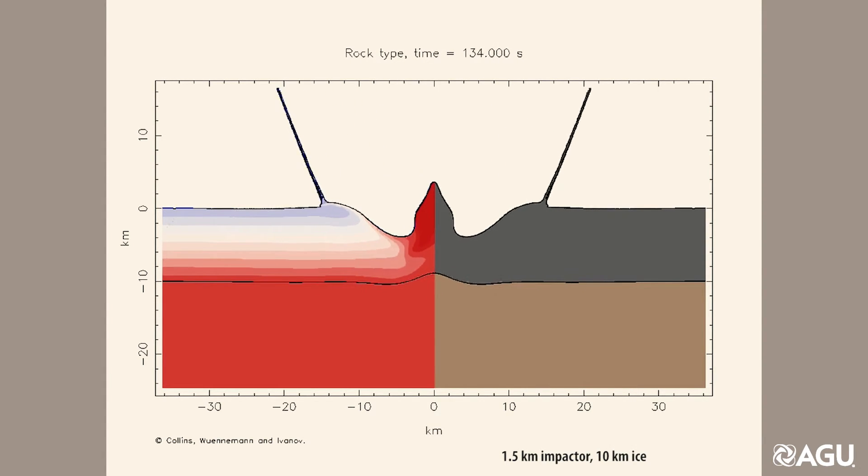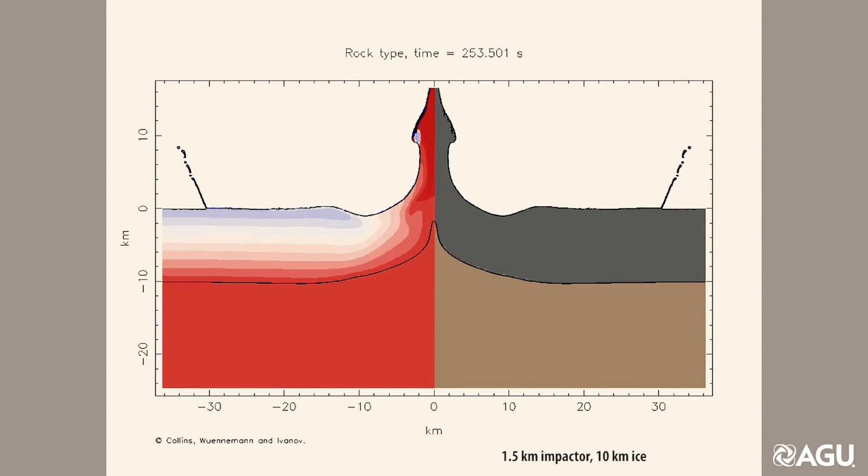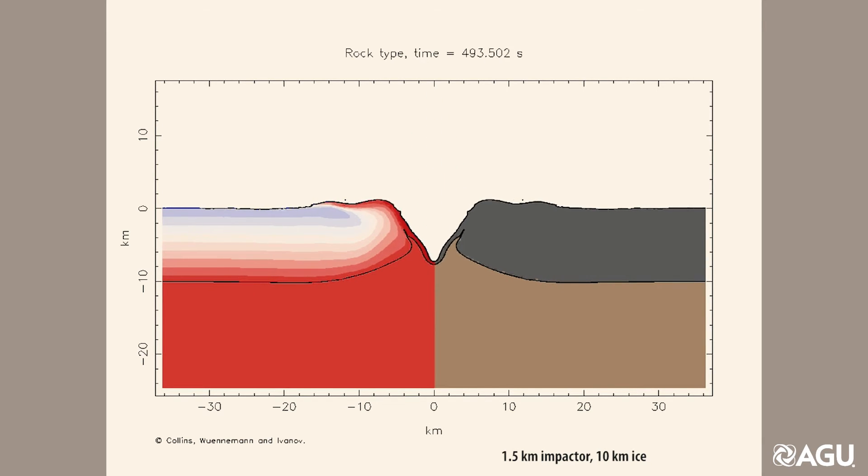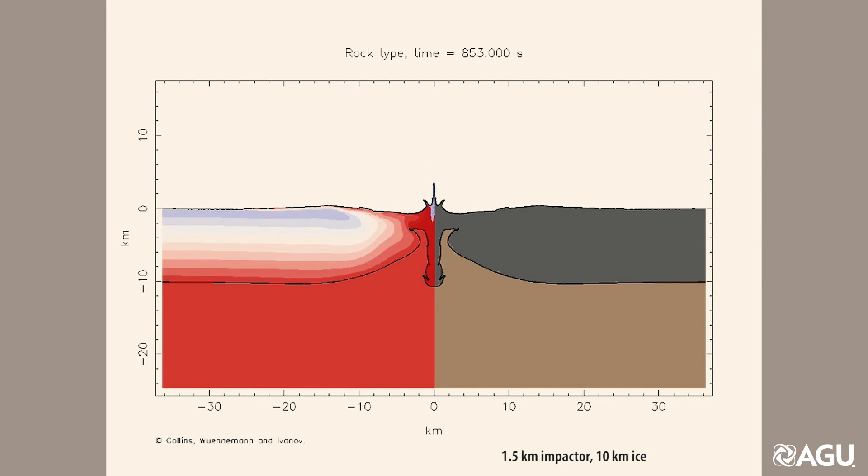In this final simulation, a 1.5 kilometer impactor hits 10 kilometer ice. The transient cavity is 10.2 kilometers deep, so the initial impact punctures the ice fully, with full mixing between the surface and the ocean.